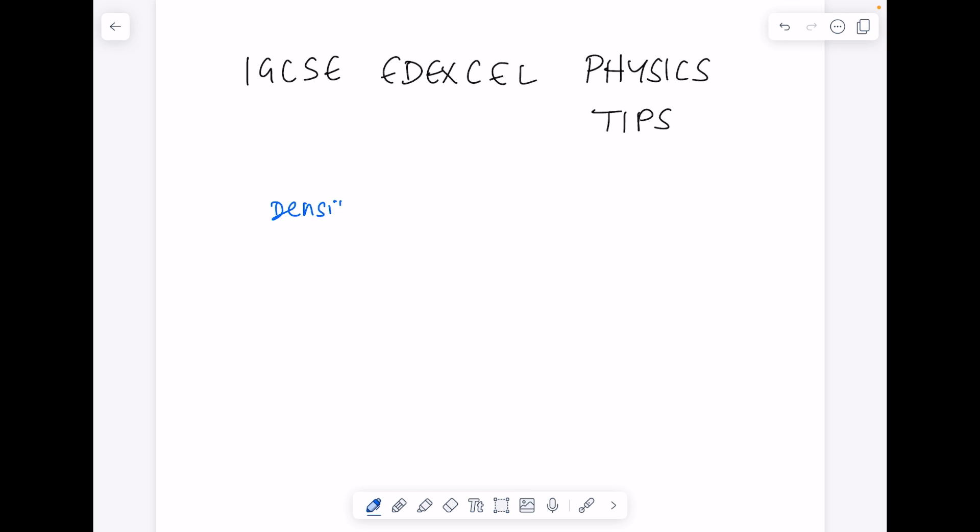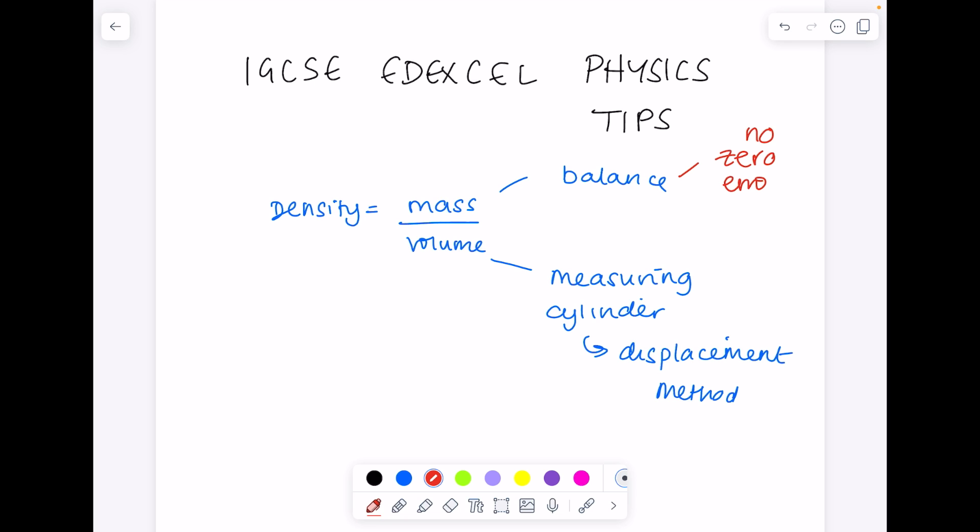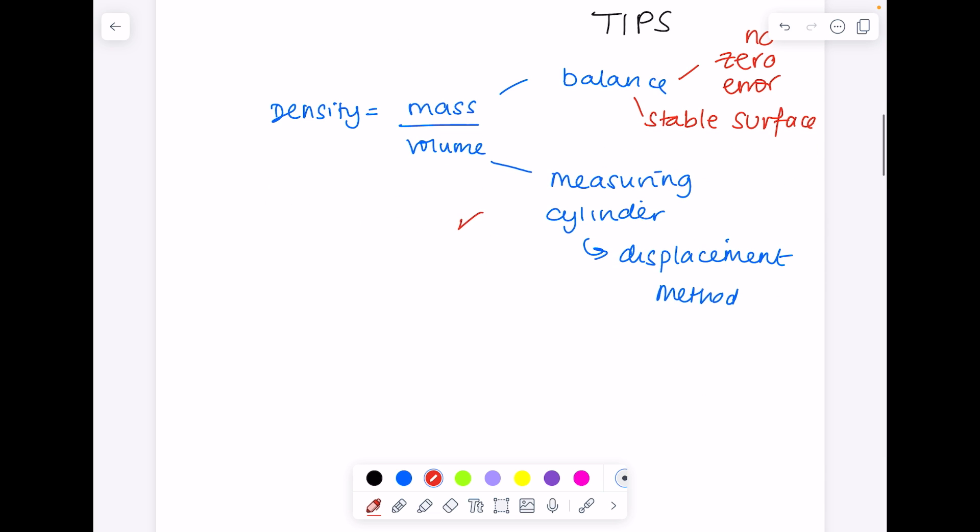Just to write that in words, density equals mass divided by volume. So you're going to use a balance to find the mass. You're going to use the displacement method with a measuring cylinder to find the volume. And they could ask for extra details to do with how you're using that apparatus. We want to avoid zero error, we want a stable surface for that balance. The measuring cylinder needs to be read at eye level to avoid parallax issues and read from the bottom of the meniscus.